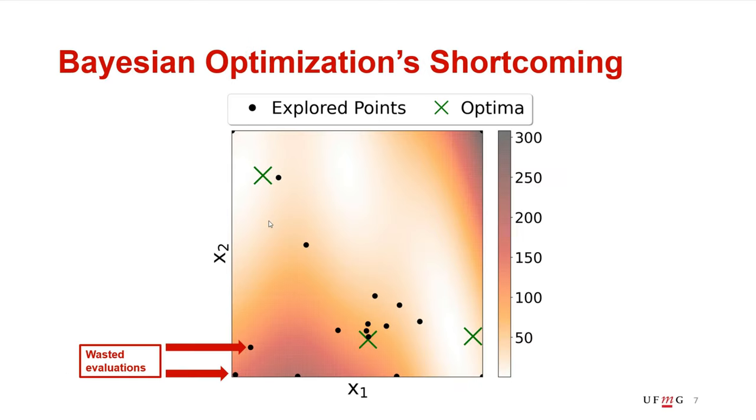The result is that when they try to use Bayesian optimization, Bayesian optimization often ends up wasting some or several function evaluations exploring regions that the expert already knew would not work well. And these end up being, in the eyes of the expert, wasted evaluations.